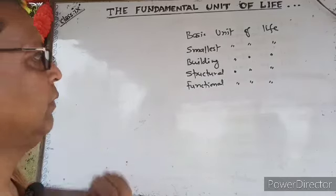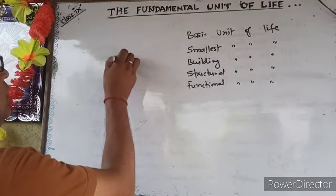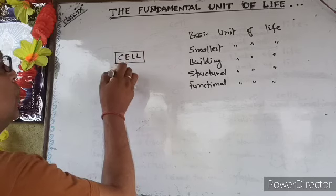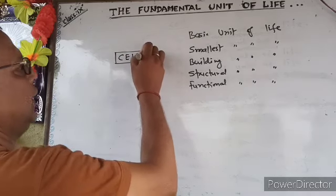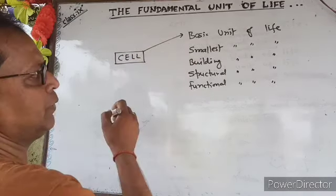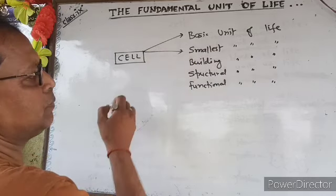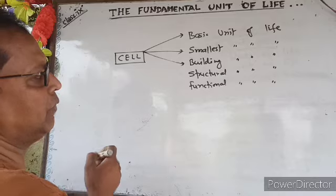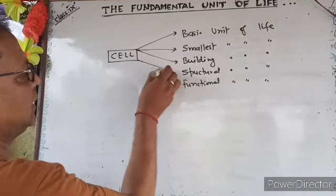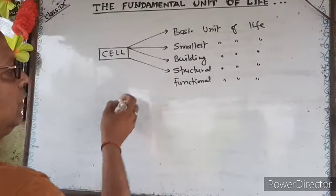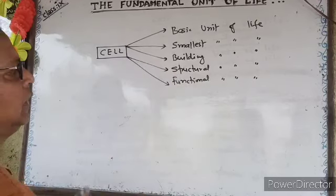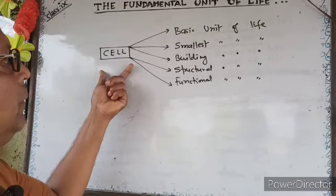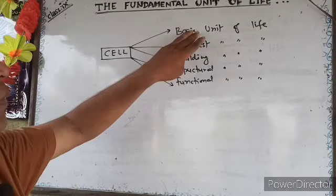What is the basic unit of life? It is our cell. Cell is the basic unit of life, the smallest unit of life, the building unit of life, the structural unit of life, and the functional unit of life.